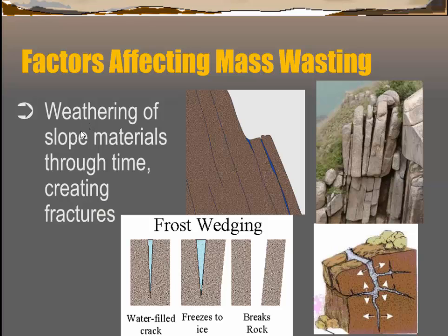Another thing that affects mass wasting is the freeze-thaw cycle — a natural weathering process where water gets into cracks in rocks or other slope materials. When that water freezes, ice expands and can break apart slope materials. Here's an example of rocks about to fall in a rockfall, and another where water has gotten between rocks and is pushing them apart.